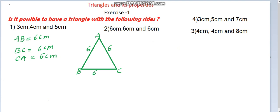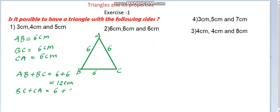Our condition is: the sum of the lengths of any two sides is greater than the length of the third side. Checking: AB plus BC equals six plus six equals twelve centimeters. Next, BC plus CA equals six plus six equals twelve centimeters.